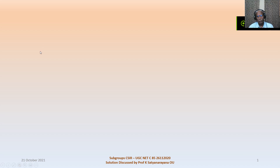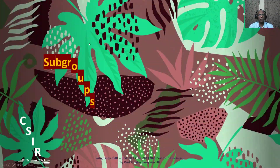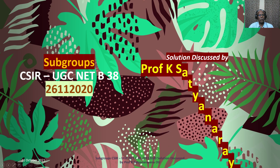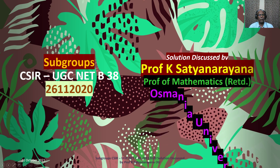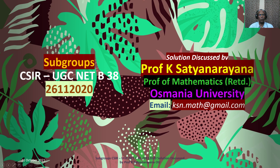Here we discuss a problem from group theory on subgroups. This problem appeared in CSIR UGC National Eligibility Test held on 26th November 2020 under Section B.